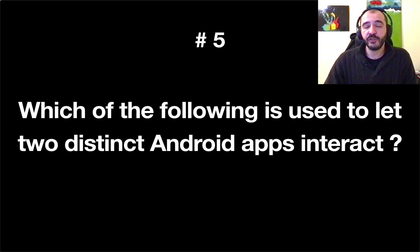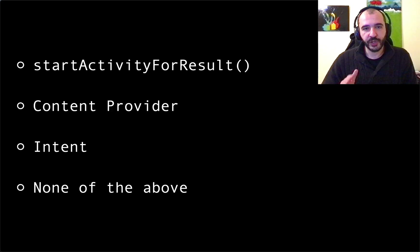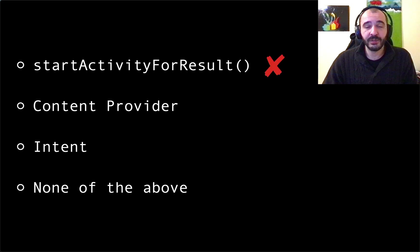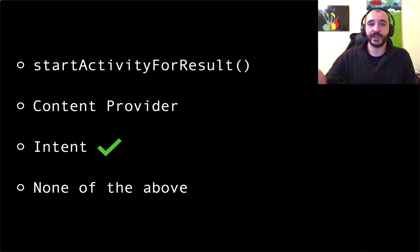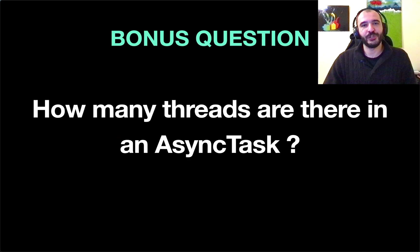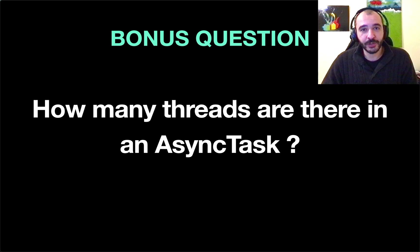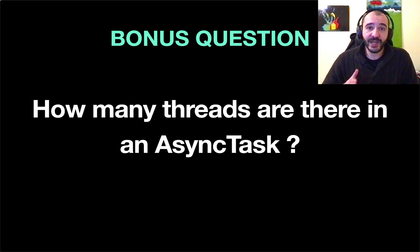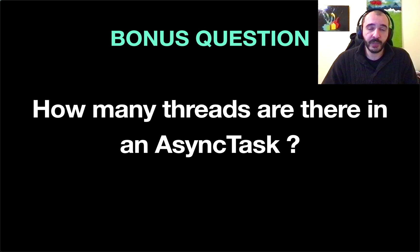Number five: which of the following is used to let two distinct apps communicate? The answer is Intent — not startActivityForResult. An Intent allows you to interact with another app. Bonus question: how many threads are there in an AsyncTask? If you know the answer, put it in the comments. In the next episode I'll answer this question and include more real-world Android interview questions. Good luck.